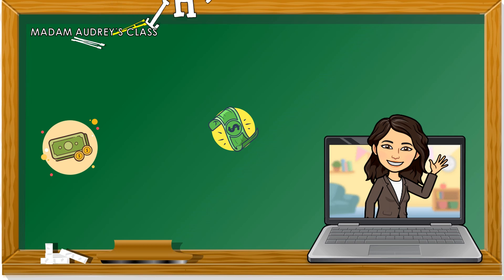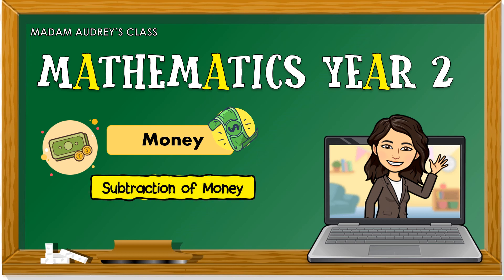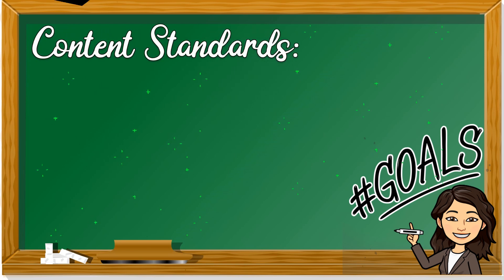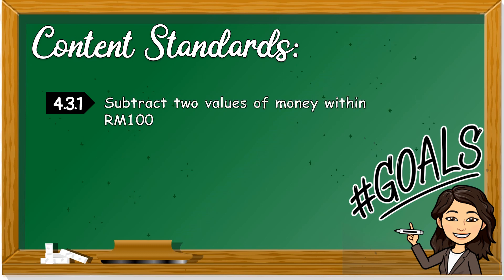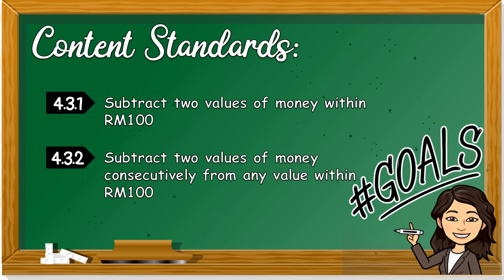Good morning class, welcome to Mathematics Year Two. We'll still be looking at money. We have learned addition of money — now it is subtraction of money. Let's take a look at the content standards: 4.3.1, subtract two values of money within 100 ringgit, and 4.3.2, subtract two values of money consecutively from any value within 100 ringgit.